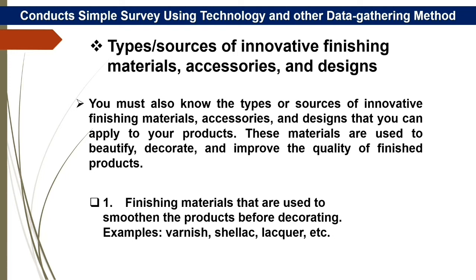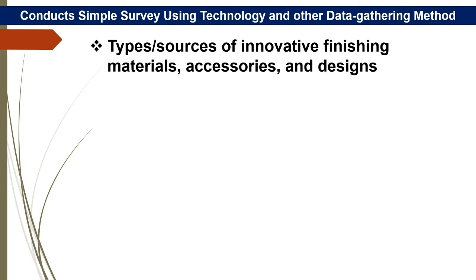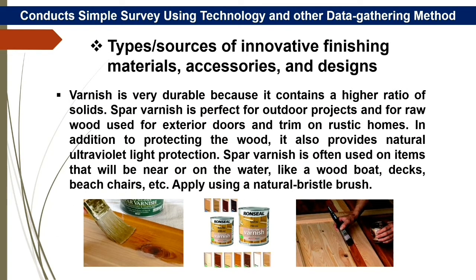These materials are used to beautify, decorate, and improve the quality of finished products. One: finishing materials that are used to smoothen the products before decorating — examples: varnish, shellac, lacquer, etc. Varnish is very durable because it contains a higher ratio of solids. Spar varnish is perfect for outdoor projects and for raw wood used for exterior doors and trim on rustic homes, and also provides natural ultraviolet light protection.